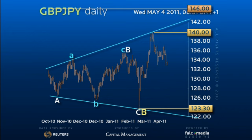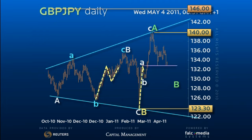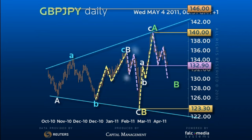However, it is clearly correcting the entire 123.30-140 three-wave rally and therefore leaves the 132.90 pivot point vulnerable in the short term in a larger retracement. The question is to where?